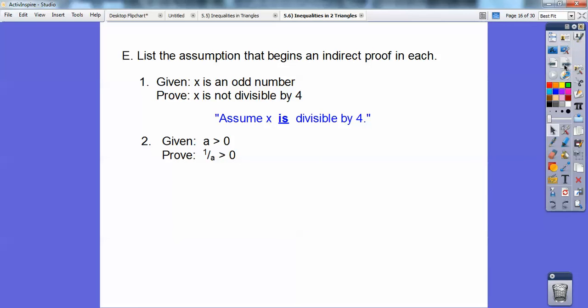Let's do that with this one. Given A is greater than 0, prove that 1 over A is greater than 0. So I want to say the opposite. Assume 1 over A, what's the opposite of greater than 0? Some of you guys don't know. Less than or equal to 0. Duh. Hit your forehead. Duh.